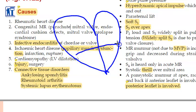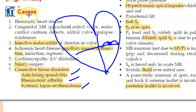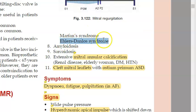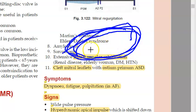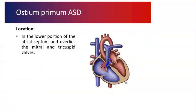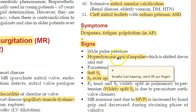Mitral valve prolapse can happen because of connective tissue and collagen disorders — such as ankylosing spondylitis, rheumatoid arthritis, systemic lupus erythematosus, Marfan syndrome, and Ehlers-Danlos syndrome. Mitral annular calcification can also cause regurgitation when the annulus is calcified. Cleft mitral leaflets with ostium primum ASD, where the septal defect affects the mitral valve, is another cause.